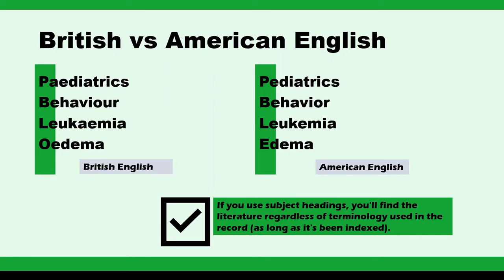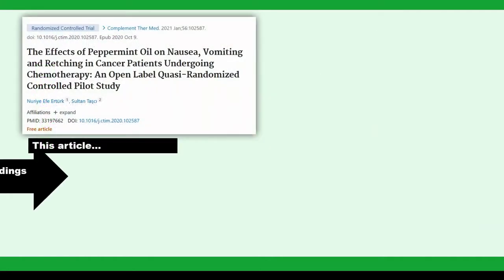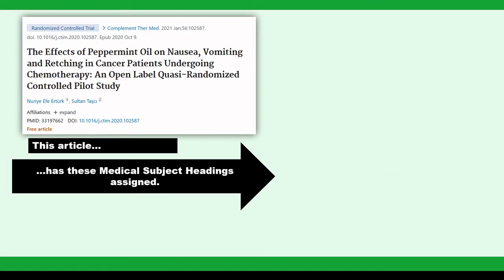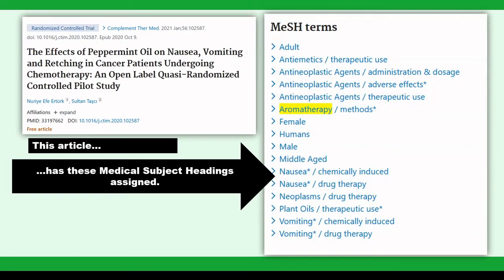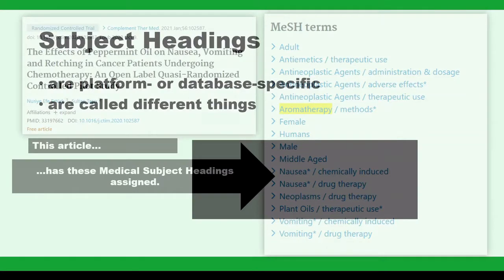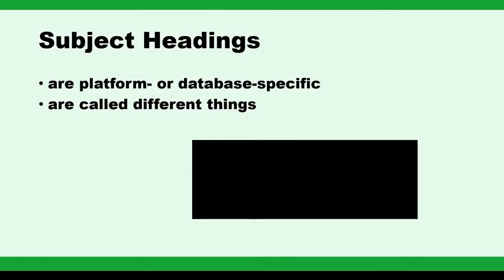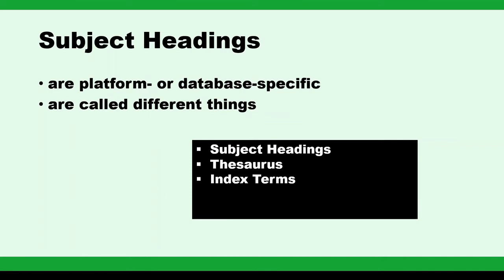Subject headings are platform or database specific. There can be confusion because different platforms call their subject headings different things. You may hear it called subject headings, a thesaurus, index terms, a descriptor, or a controlled vocabulary.